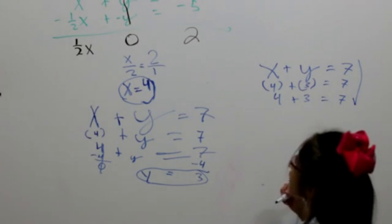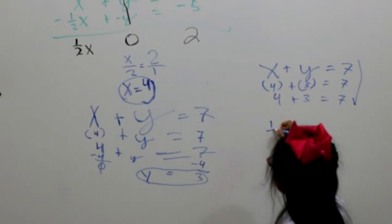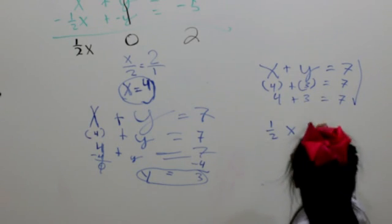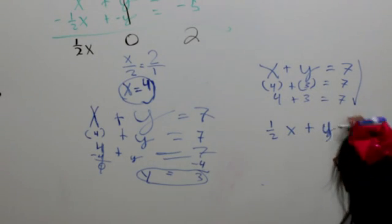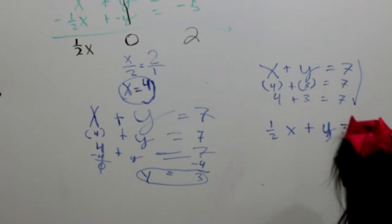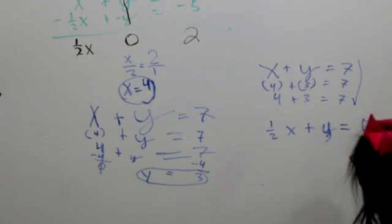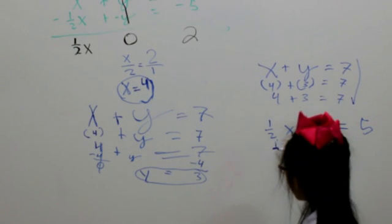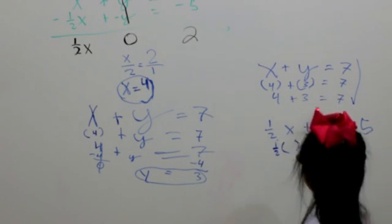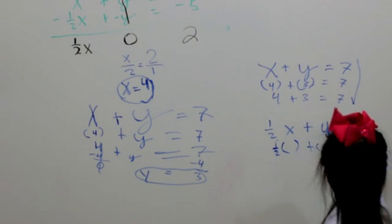Then, you copy your other equation. 1 half x plus y equal to 5. 1 half, parentheses plus parentheses equals 5.